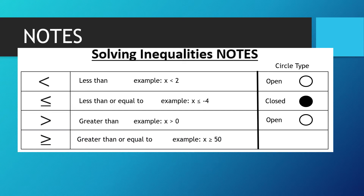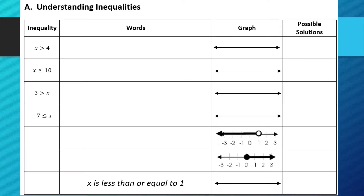The last symbol to review is greater than or equal to. It has that extra line under it, like the less than or equal to symbol. For example, x could be greater than or equal to 50 — so any number greater than 50 on the number line, but it can actually equal 50. When we graph that, we put a closed circle.